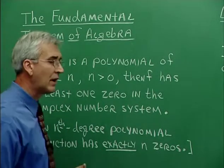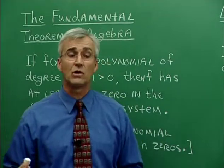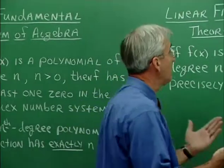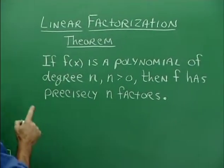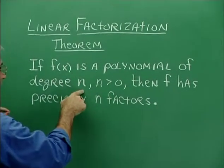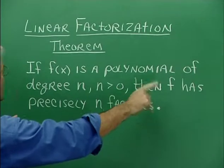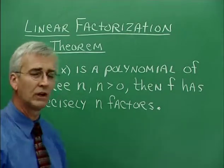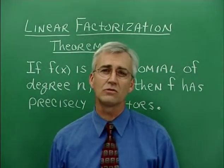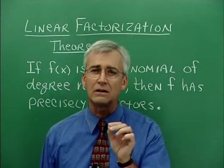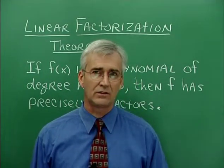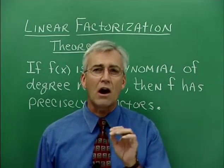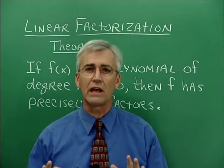We've talked already about the notion that zeros lead to factors. So this idea of n zeros in an nth degree polynomial function leads us to the Linear Factorization Theorem, which says that if f(x) is a polynomial of degree n, where n is greater than zero, then that function has precisely n linear factors. This tells us about the existence of those things, but it doesn't tell us much about how to find them. Our idea now is to go after them, to investigate for them.